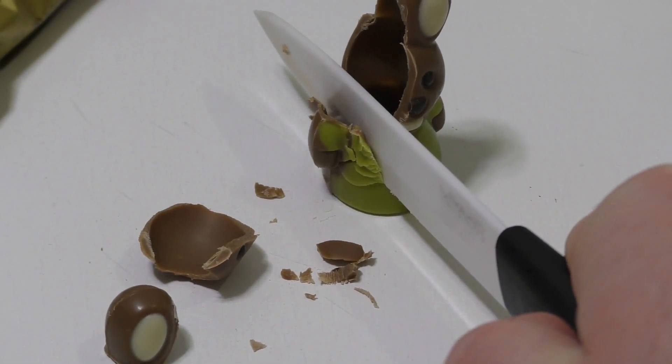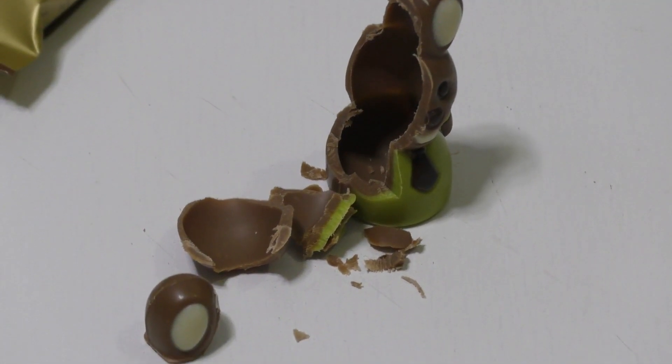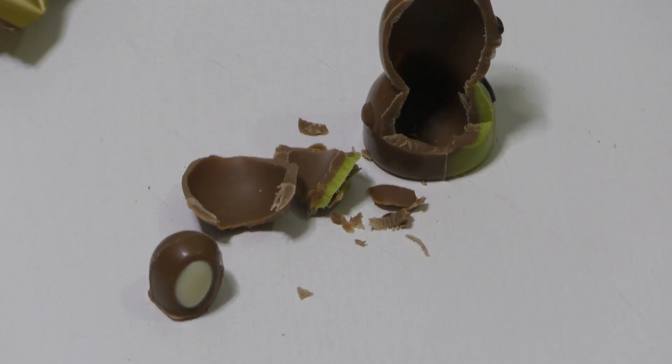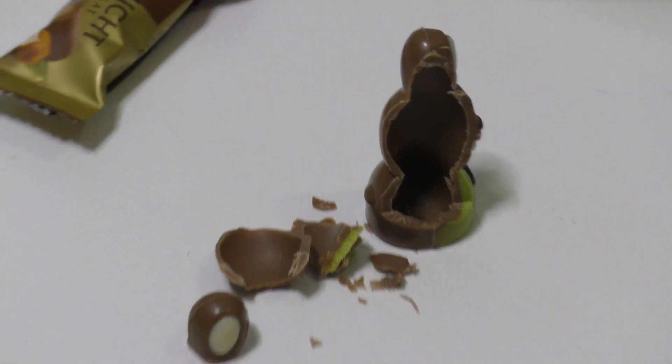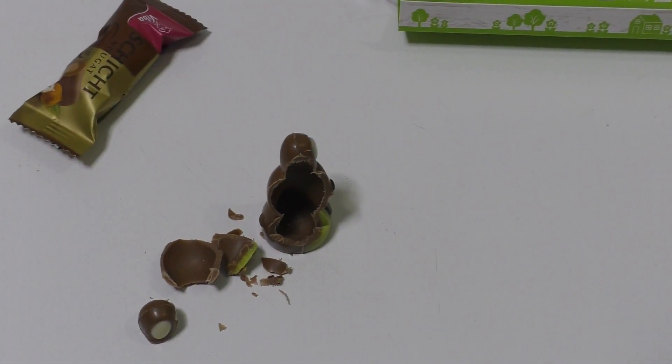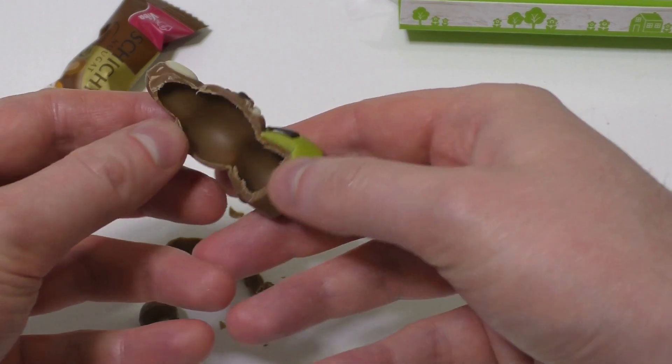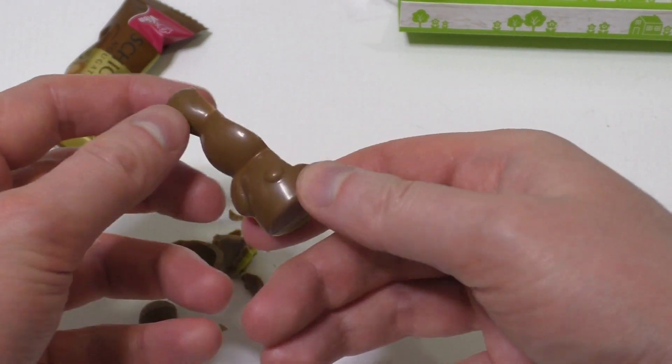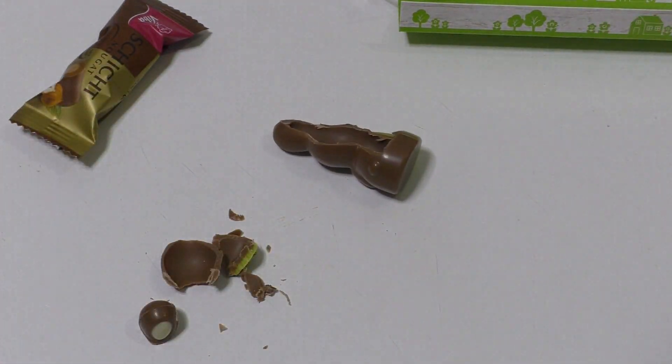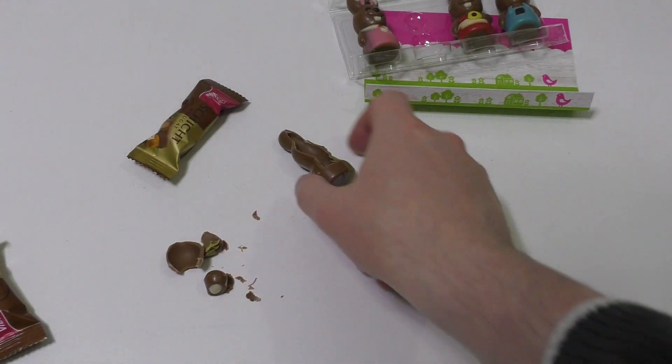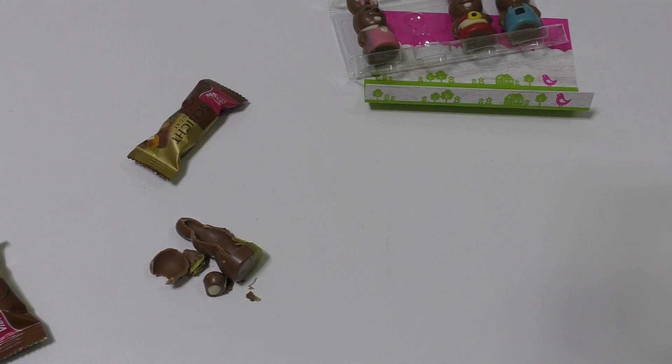Okie dokie, so now we know that it's a hollow figurine which I think was clear in the beginning. And yep, so I could also make a drop test. I could make the crush, I could make the press.